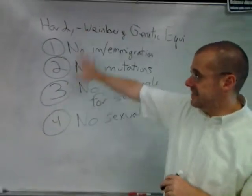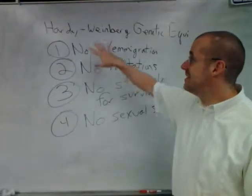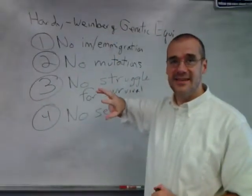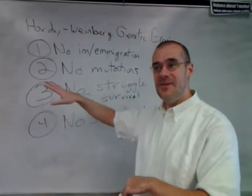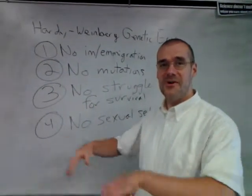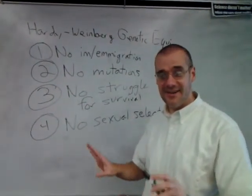And so using these four things, they say if one through four is true, then the frequency of the alleles will be constant in a population, so what that means is that they will not change at all, and that this population will go through generation after generation and never, ever change.